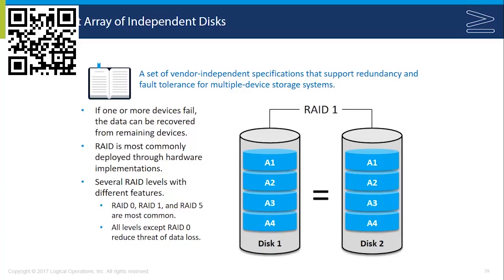RAID is most commonly implemented through hardware. There are several different RAID levels. RAID 0 is striping — it splits data but does not add any redundancy. RAID 1 is a mirror, where data is simultaneously replicated from one storage device to another; this decreases write performance but increases redundancy. RAID 5 splits data across three or more disks and adds parity information — as you write to one disk, parity is written on the others. If you lose a drive, you can use that parity information to restore the data from the failed drive.